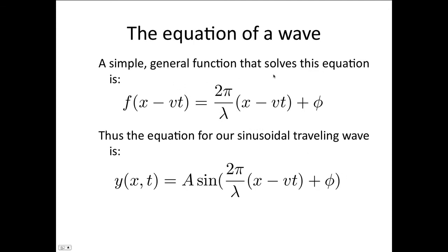A simple general function that solves this equation is if we let f of x minus vt be 2π over lambda times (x minus vt) plus phi. You can just substitute this into that equation on the last slide to prove that. Remember, this f is in radians, so it's going to go into our sine function. We would expect to have the amplitude outside of the sine function, because that is the maximum displacement from equilibrium. So our wave equation is going to have the form: y of x and t is equal to the amplitude times sine of (2π over lambda)(x minus vt) plus phi. The phi is just there to make this very general, so that we can match any starting conditions.